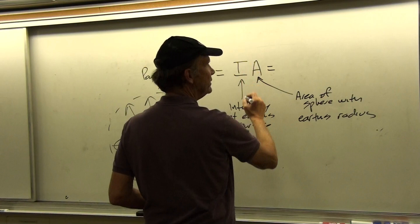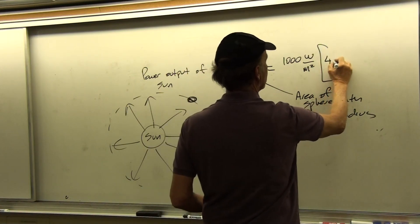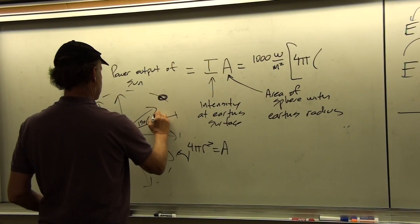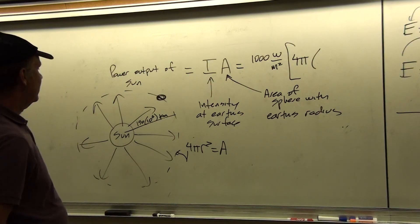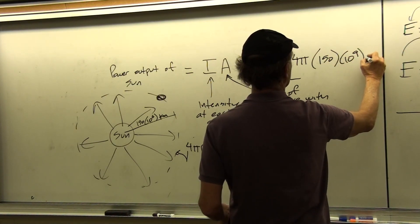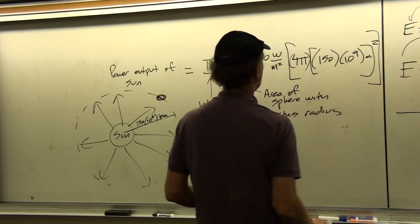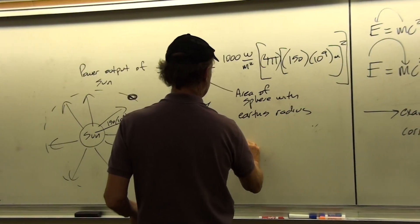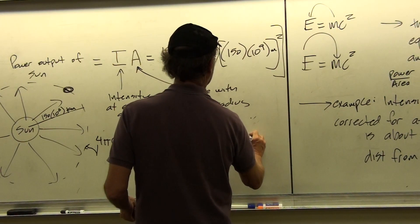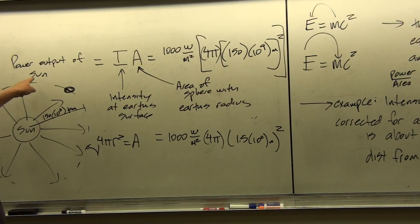Now we can write: the intensity is 1,000 watts per square meter times 4π times the distance from the Earth to the Sun, so that's 150 times 10 to the 6 kilometers. The radius r is going to be 150 times 10 to the 9 meters, squared. So that's 1,000 watts per square meter times 4π times 1.5 times 10 to the 11 meters, squared. That's going to be the power output of the Sun.